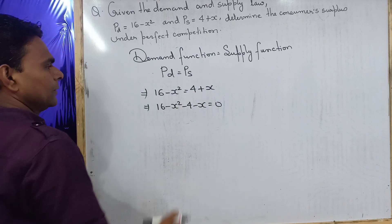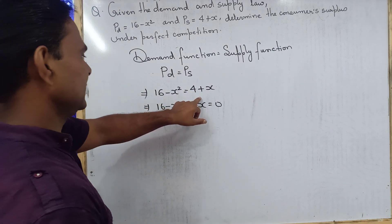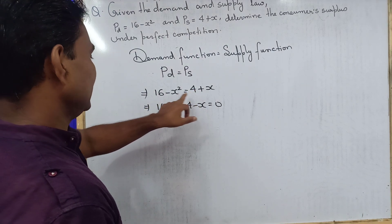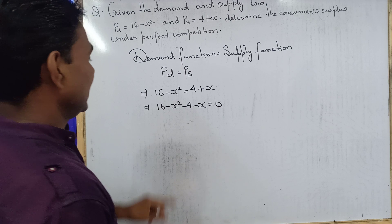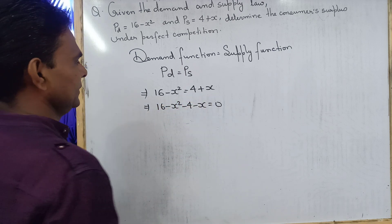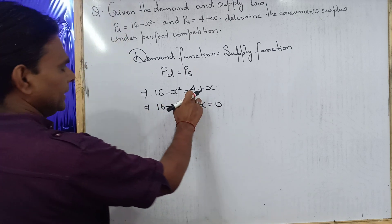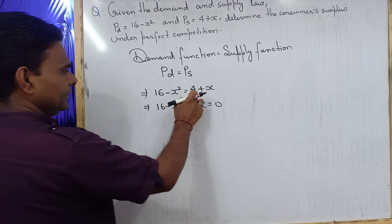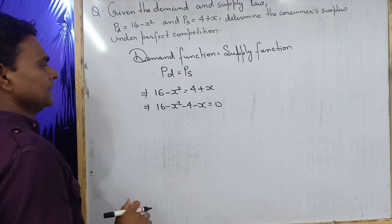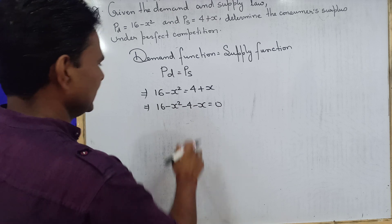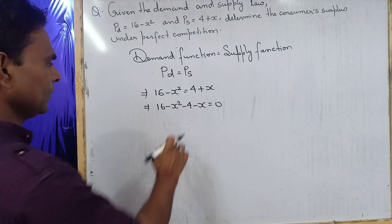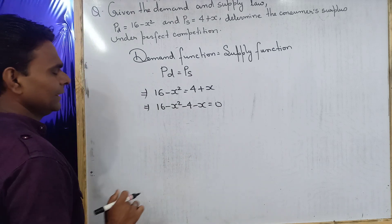All terms from the RHS side — 4 plus x — when shifted to the LHS side, their sign will change. There is a positive sign, so if they move to the LHS side it becomes minus. That is why I have put a minus sign before 4 and x.